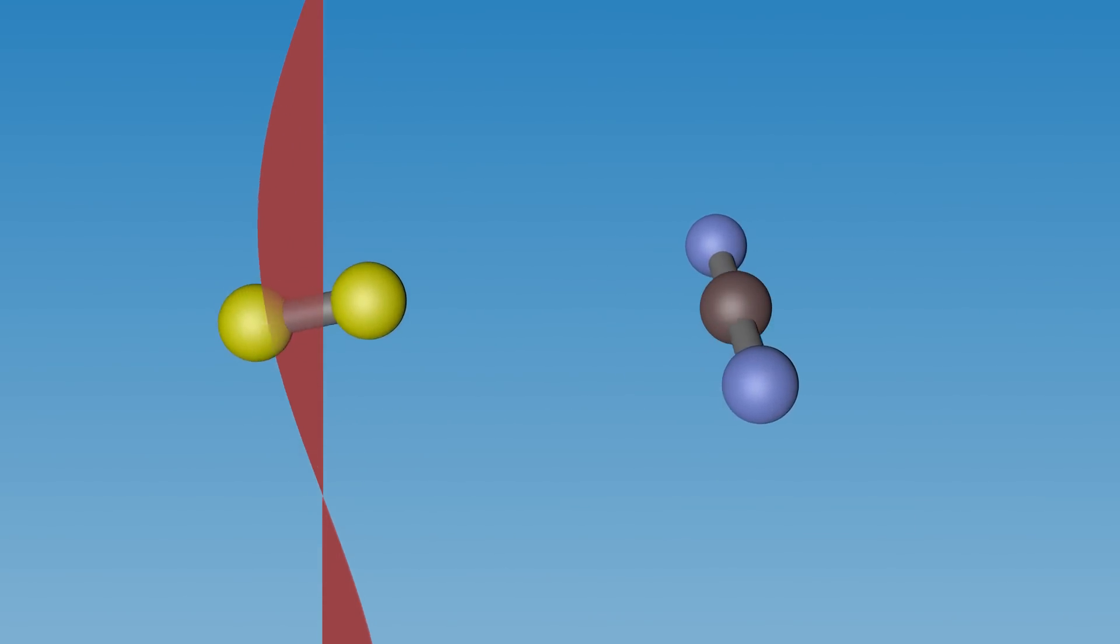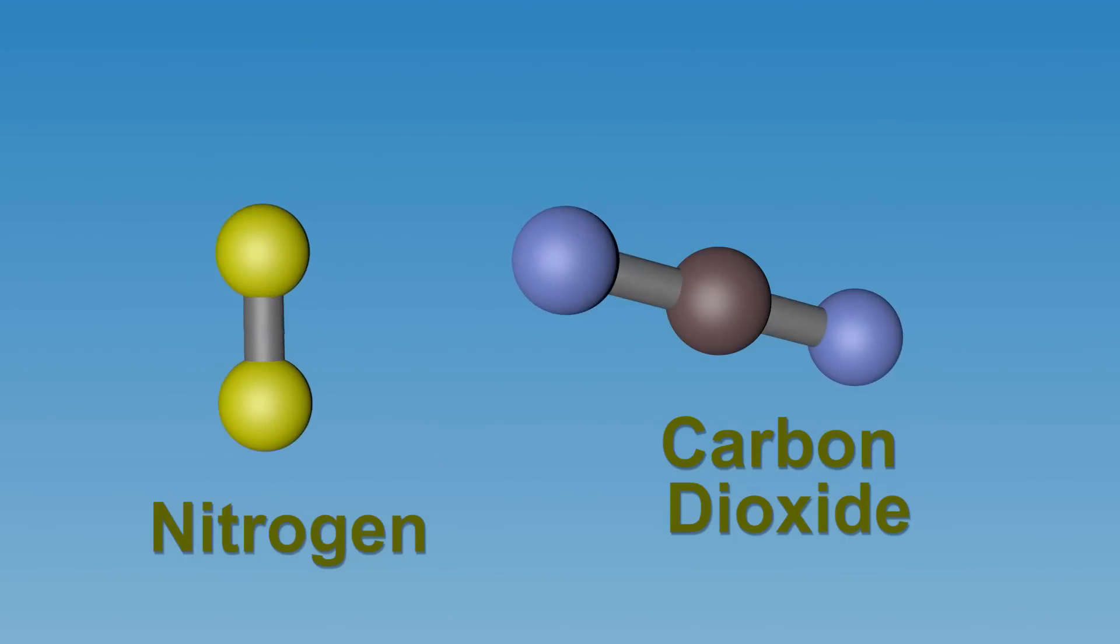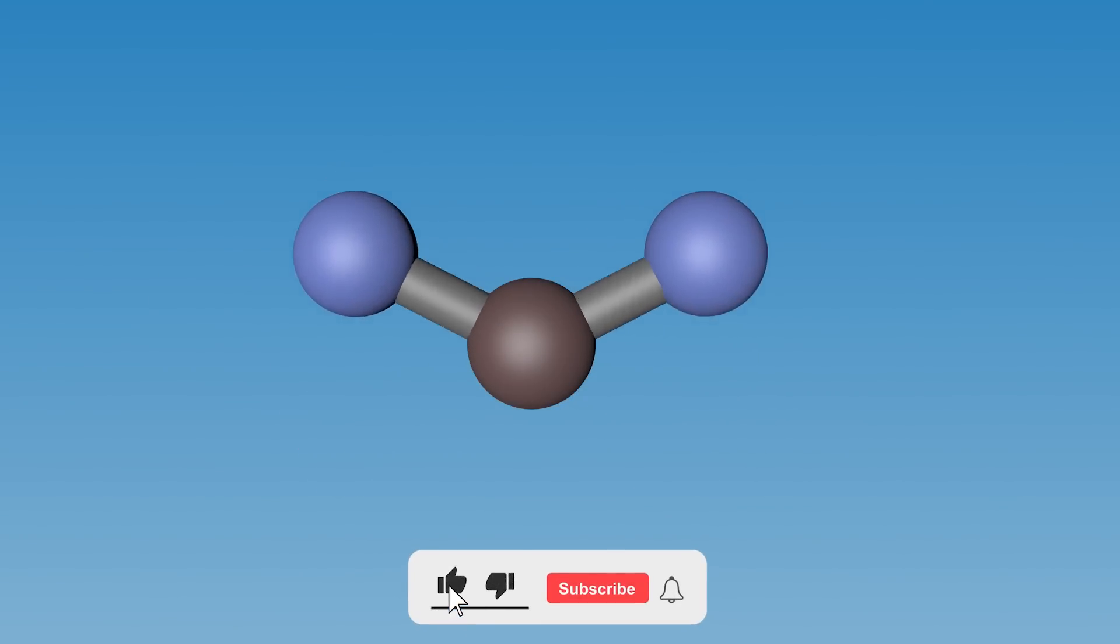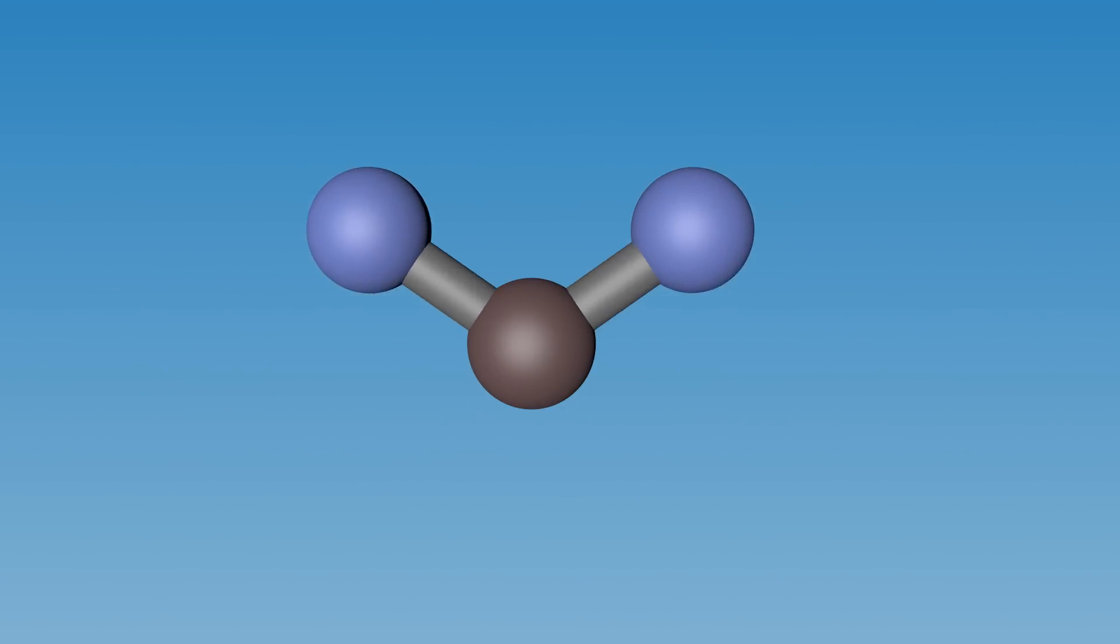That means there should be something special with carbon dioxide compared to nitrogen. To find it, let us study the structure of carbon dioxide further. If we carefully see, this kind of a vibration or oscillation is possible for carbon dioxide because of its structure.